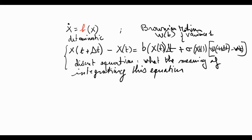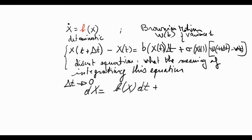In the limit as Δt → 0, the notation will be dx — this is a differential form — equal to b(x)dt + σ(x) dω. So dω, or dω_t, is the limit of the Brownian increment as Δt → 0; this is the infinitesimal writing.